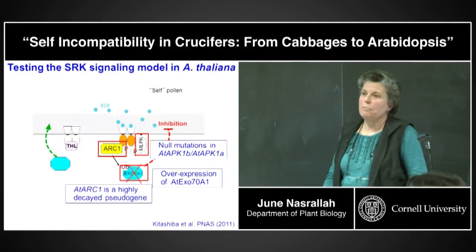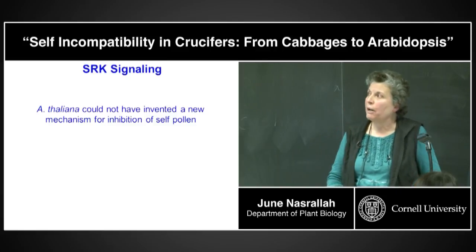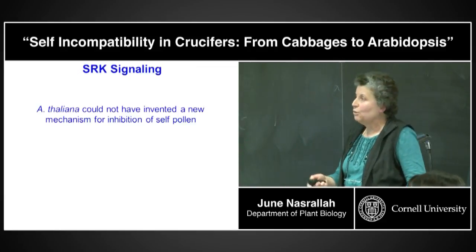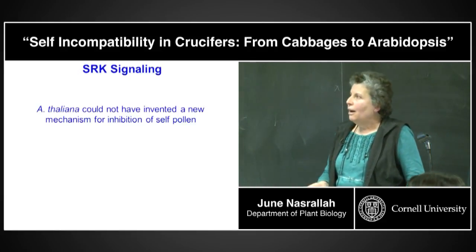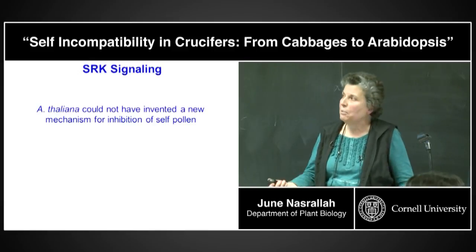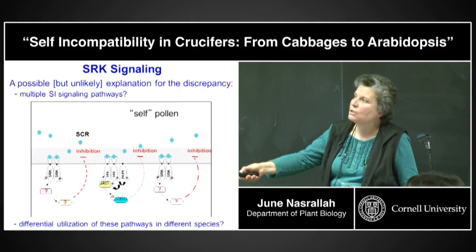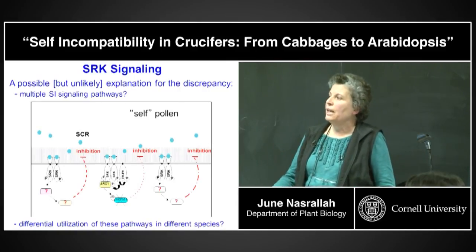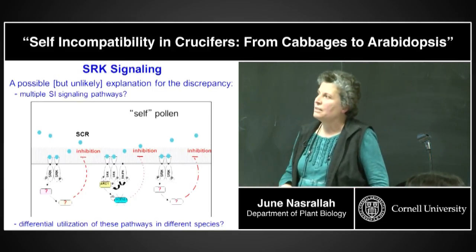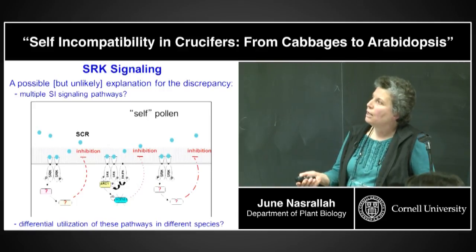How to explain this discrepancy? We don't believe Arabidopsis thaliana invented a new mechanism for inhibition of self-pollen just when we introduced two genes. A possible but unlikely explanation is that there may be multiple self-incompatibility signaling pathways, with differential utilization of these pathways in different species. Our approach for identifying additional components is to do mutagenesis in Arabidopsis thaliana, which is perfectly suited for this, work being carried out by research associate Titima Tantikanjana.